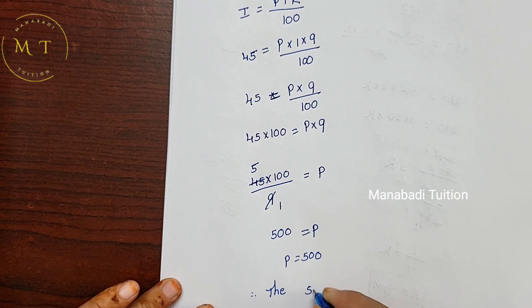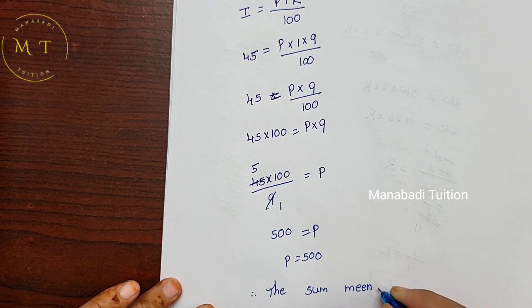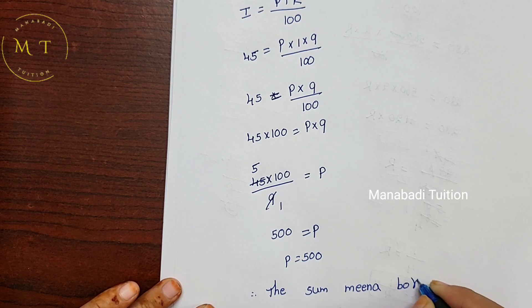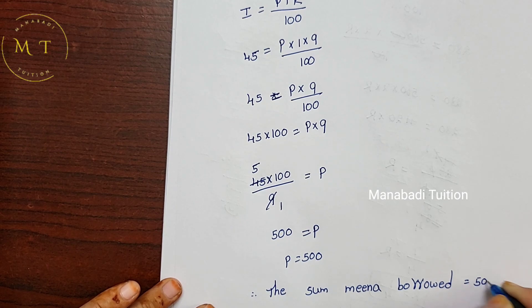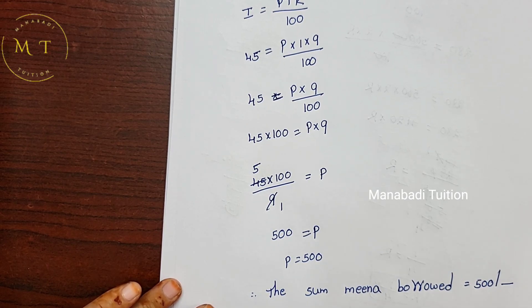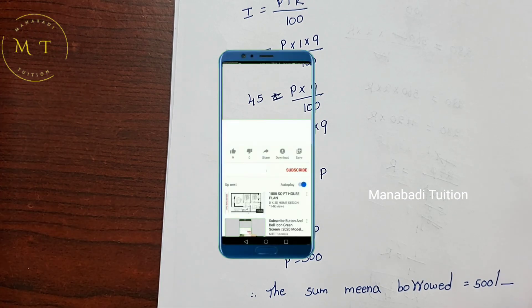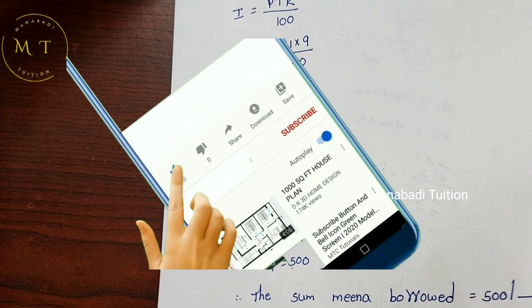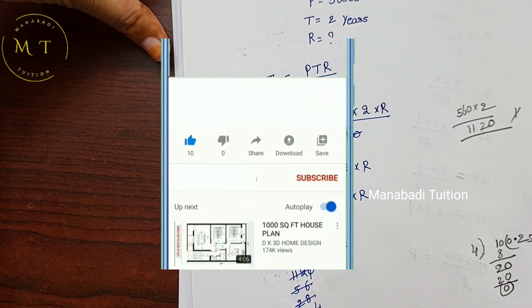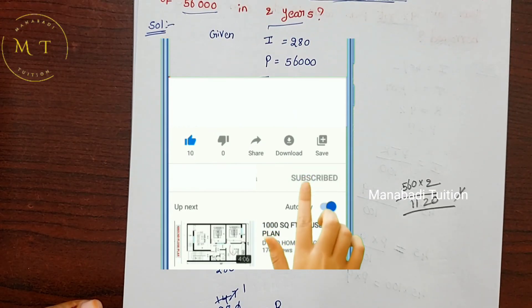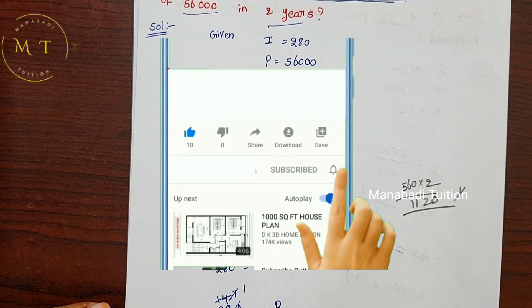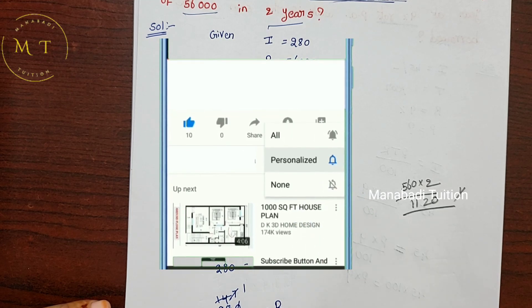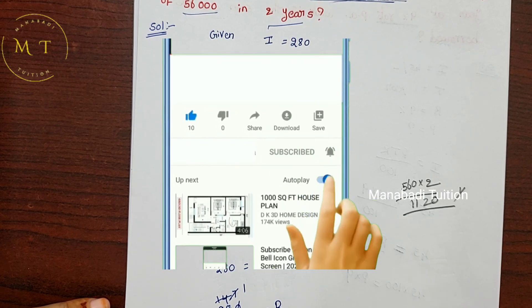P is the principal — the money borrowed. Therefore, the sum Meena has borrowed equals 500 rupees. That's it — this problem and video is now complete. If you liked the video, please like, share, and subscribe to the channel. Thank you for watching.